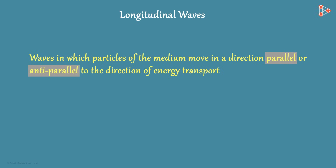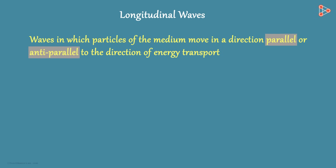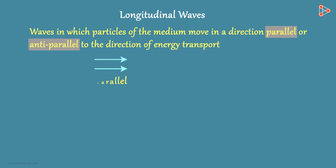What does that mean? Before we get to the statement, do you remember what parallel and anti-parallel mean? Parallel would be two vectors like this, and anti-parallel would be two vectors like this — parallel but in opposite directions.